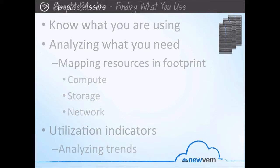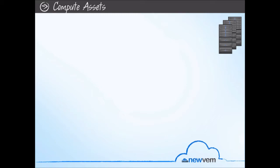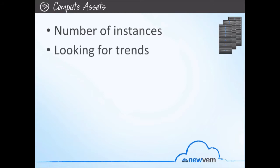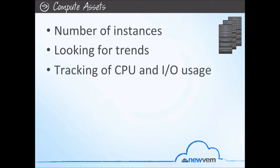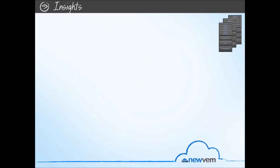In compute, some of the indicators we start populating include the number of instances you have and their status. We look for trends of how you're turning on or turning off instances. We even go to the next level of detail by tracking the actual CPU usage and IO usage within those instances. If you have reserved instances, we look at the actual usage of those reserved instances and their status. Over time, as we receive data regarding the indicators of given resources, we're able to start coming up with insights regarding the behavior of those resources.